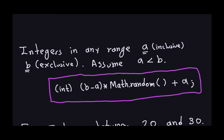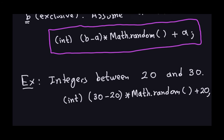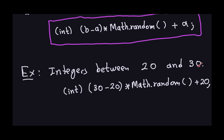For example, to generate integers between 20 inclusive and 30 exclusive, set A = 20 and B = 30. The formula becomes: (int)(Math.random() * (30 - 20) + 20). Whatever comes out is an integer between 20 inclusive and 30 exclusive. Let me show you that in the Eclipse application.